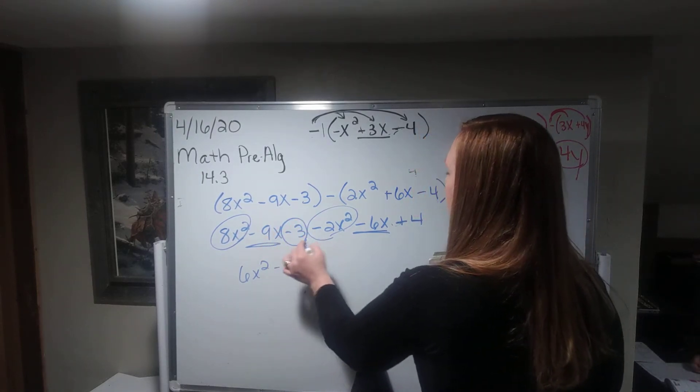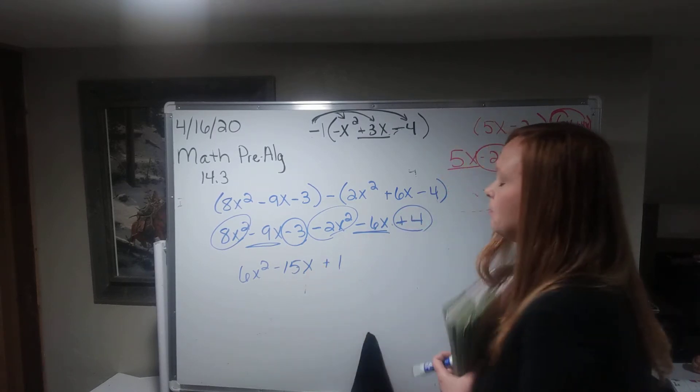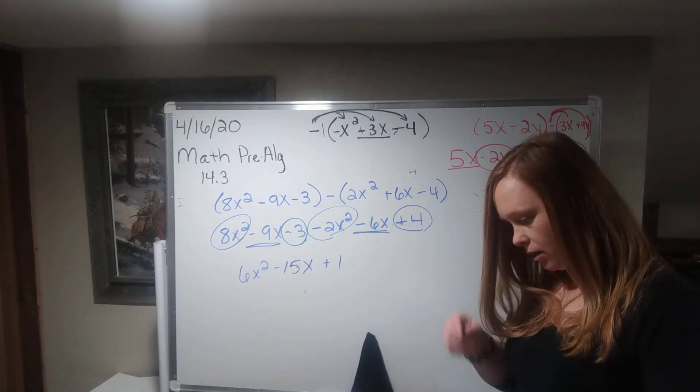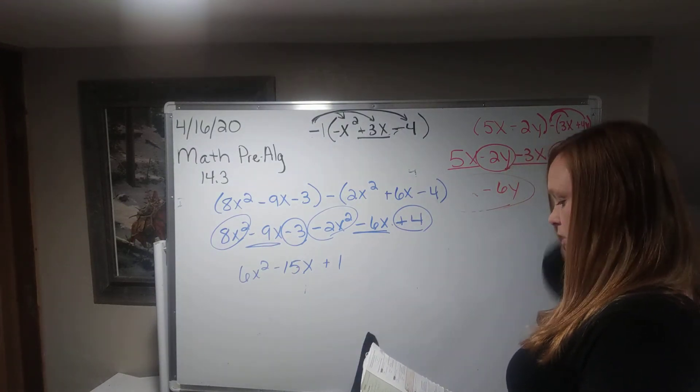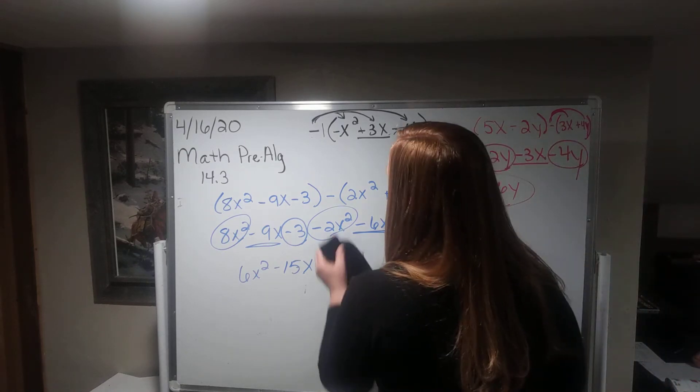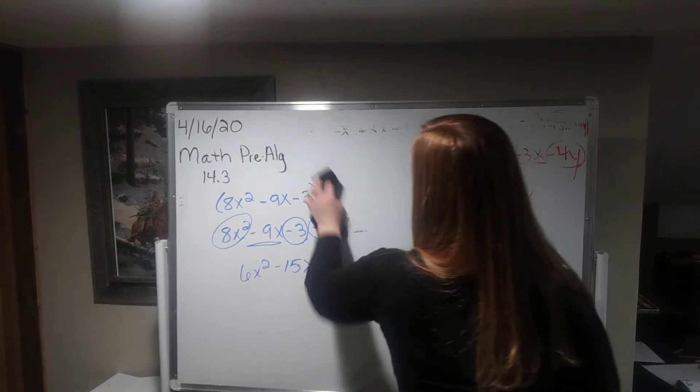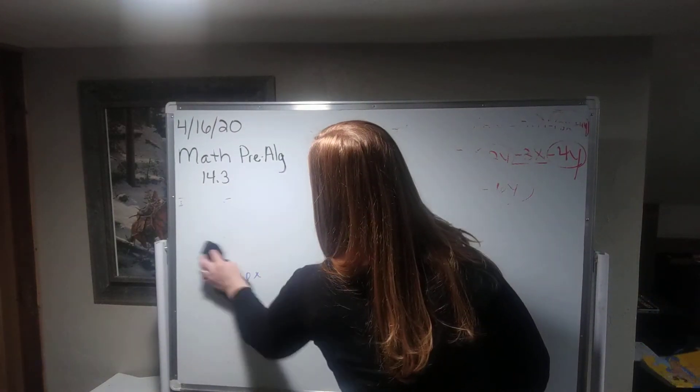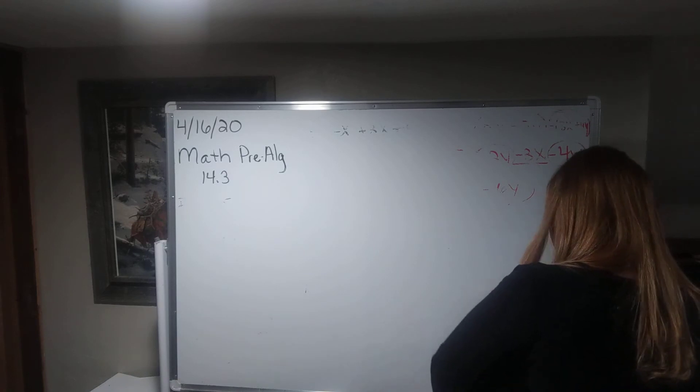And now for my numbers. Negative 3 and a positive 4 gives me 1. I can't combine anything else there. So we have 6x squared minus 15x plus 1. Okay. Next problem.